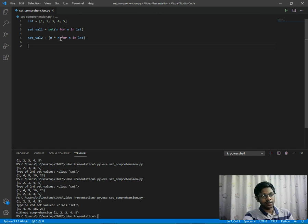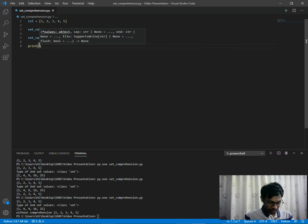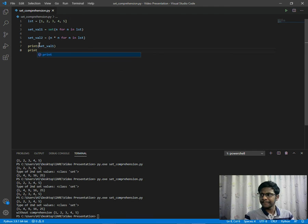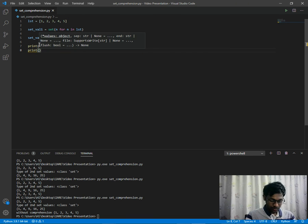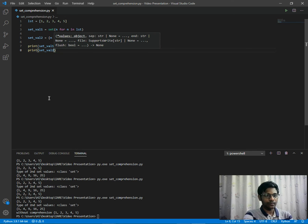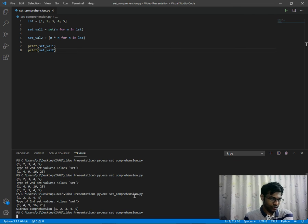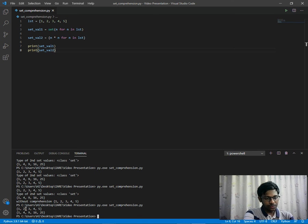This is a set consisting of integers. Let's multiply: n*n for n in list. As you can see, it has converted into a set consisting of integers again. Let's print set_val1 and set_val2. As you can see: 1, 2, 3, 4, 5 and 1, 4, 9, 16, 25.